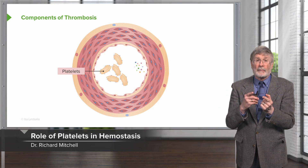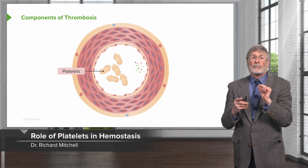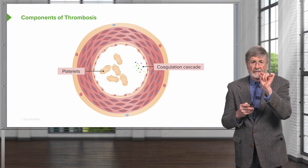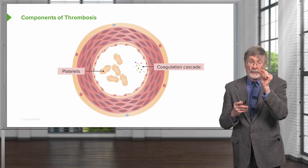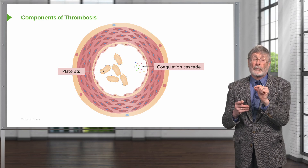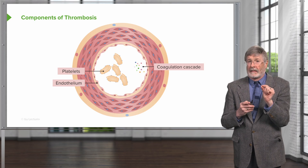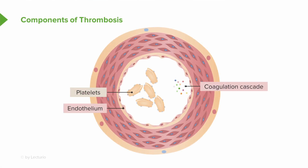Back to the components of thrombosis: platelets that are in the bloodstream, the coagulation cascade that we will come back to, which is going to be activated concurrently with our platelet recruitment and activation, and endothelial cells. All are going to be major players, but for the remainder of this session, we're going to talk about platelets and the specifics.